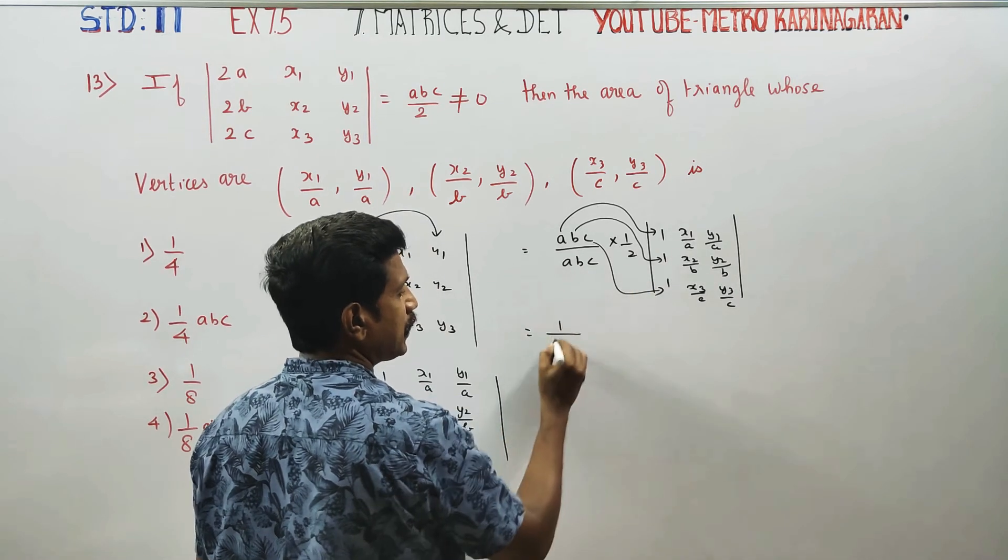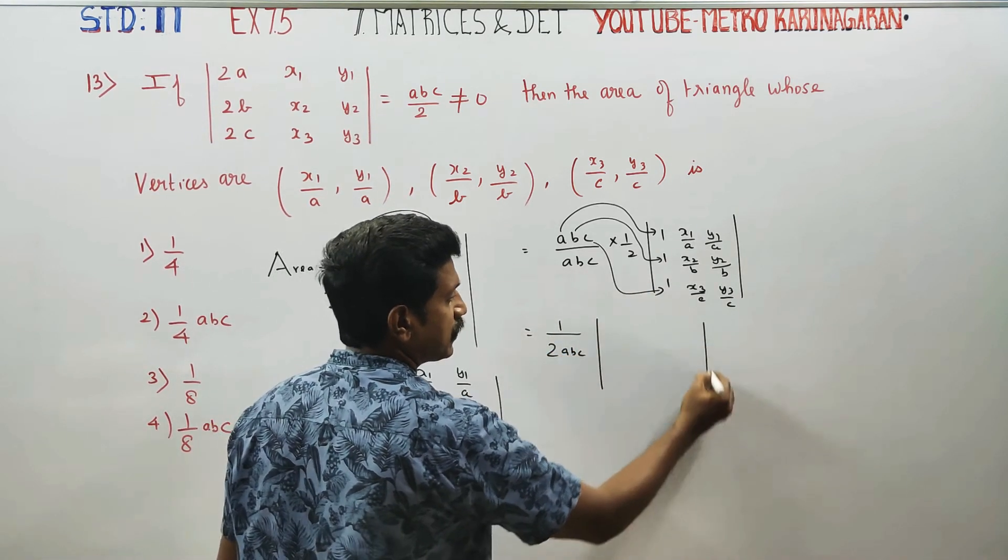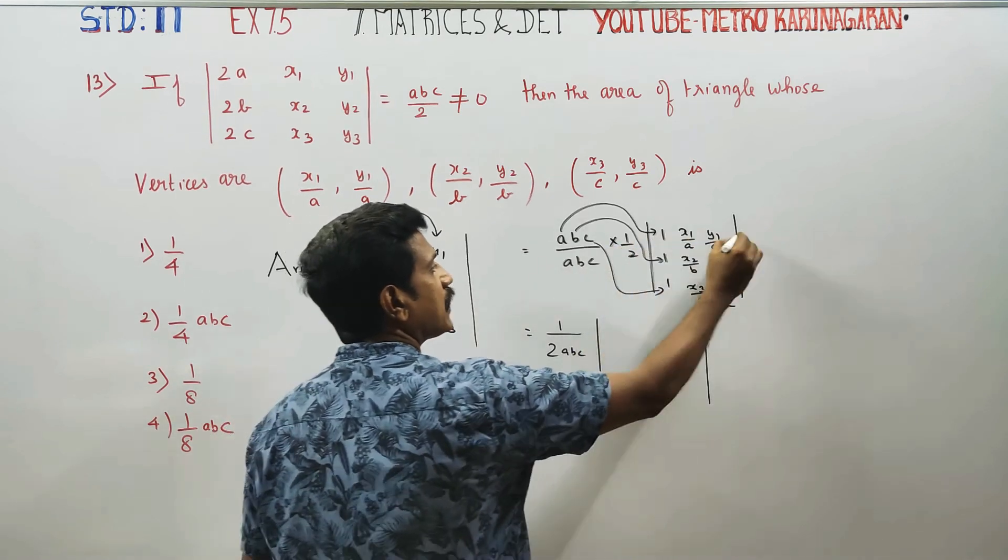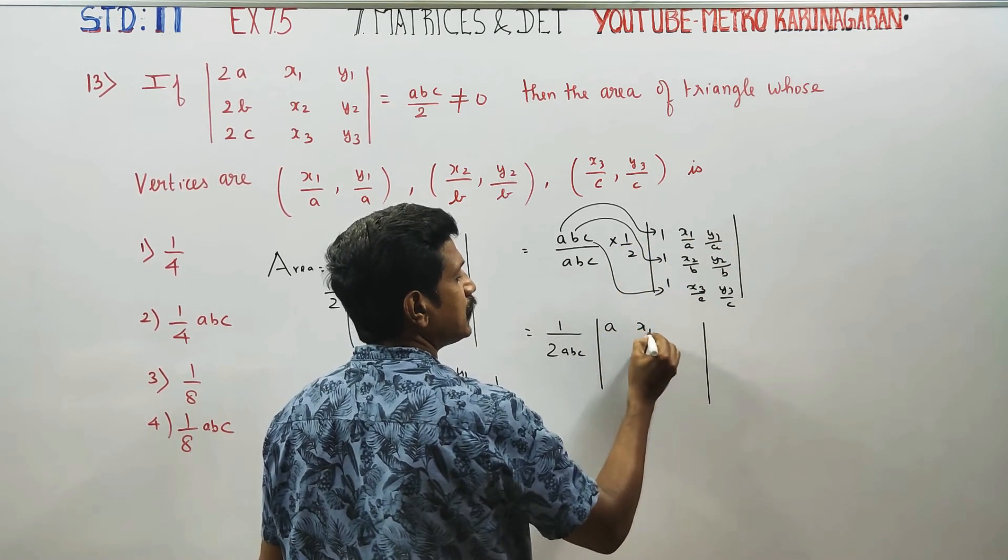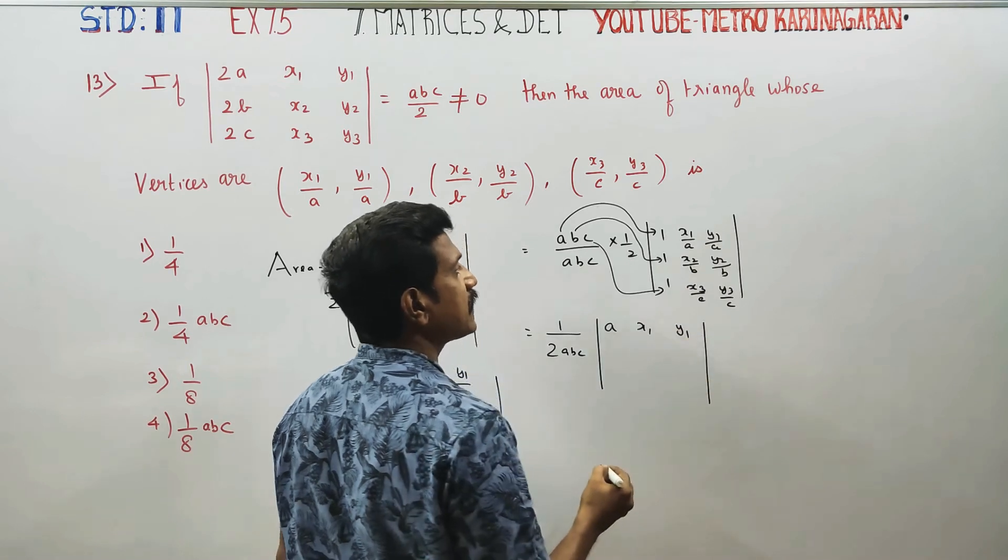Then one by two, a, b, c. If we pull out the common factors a, b, and c from each row.